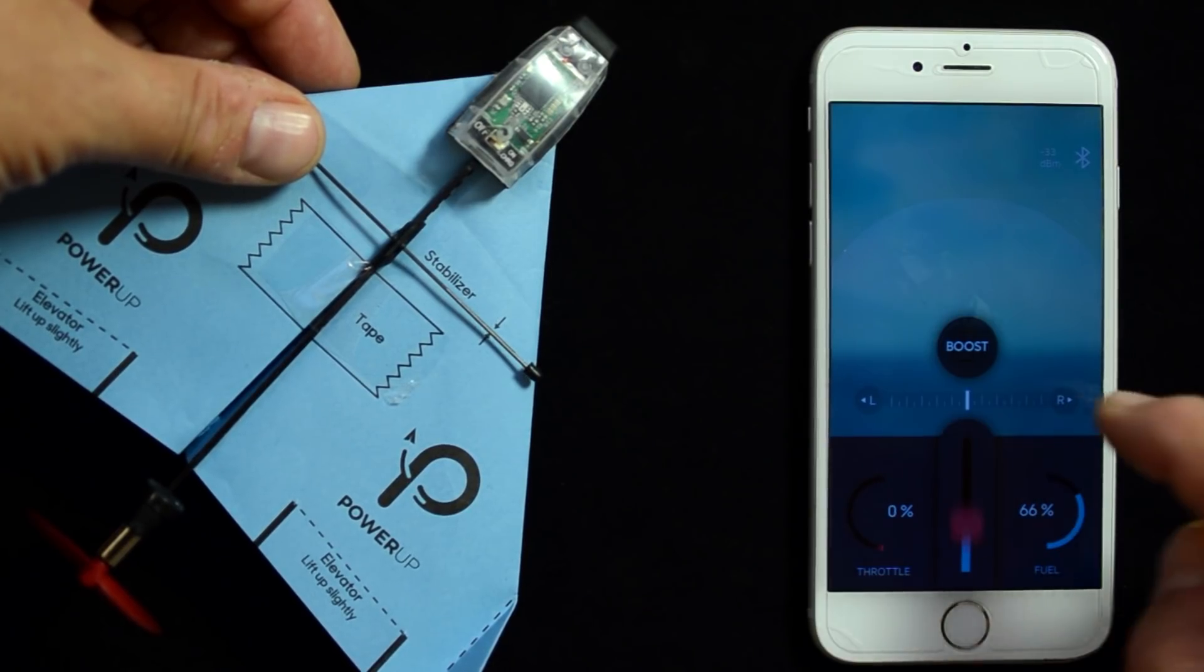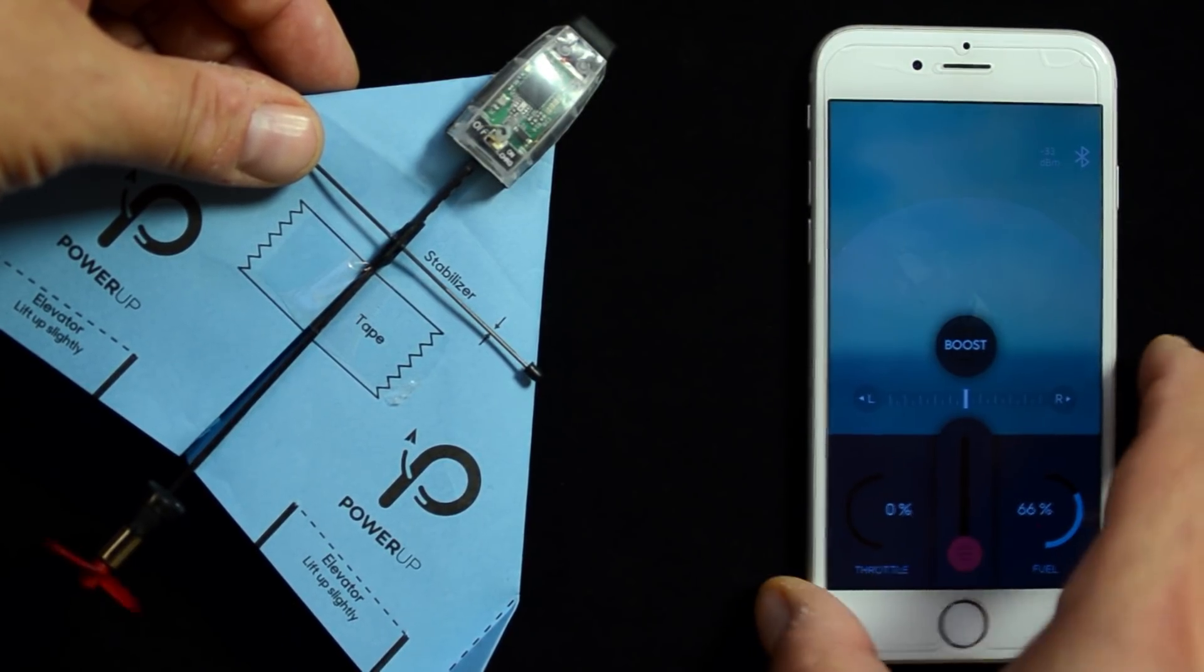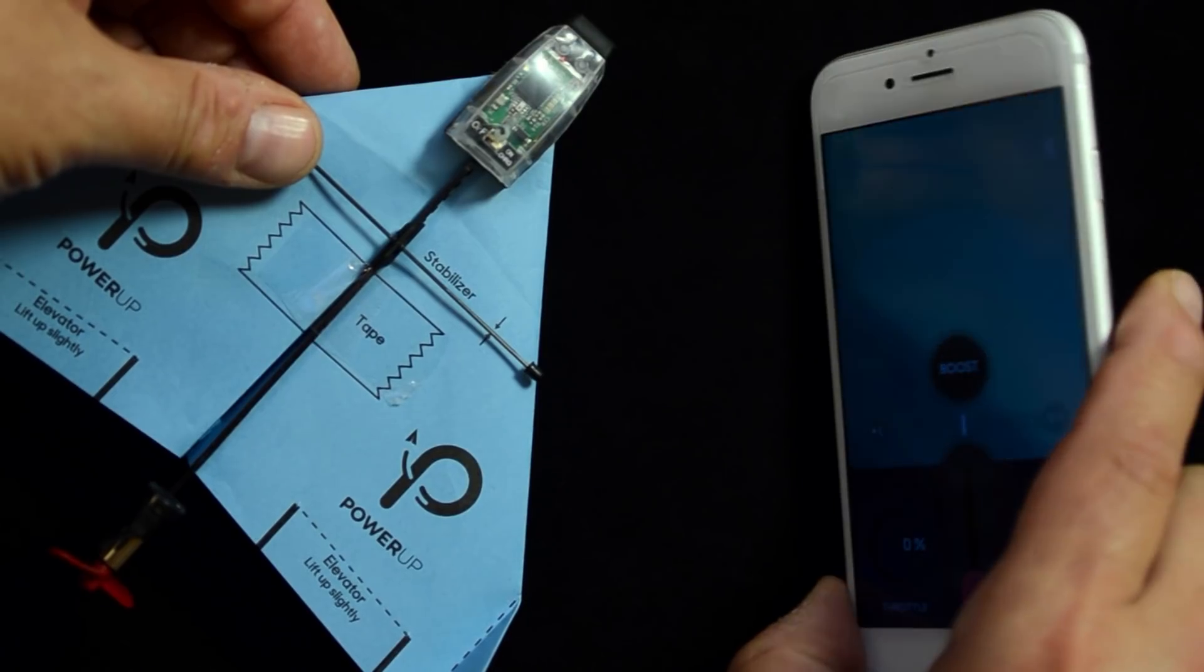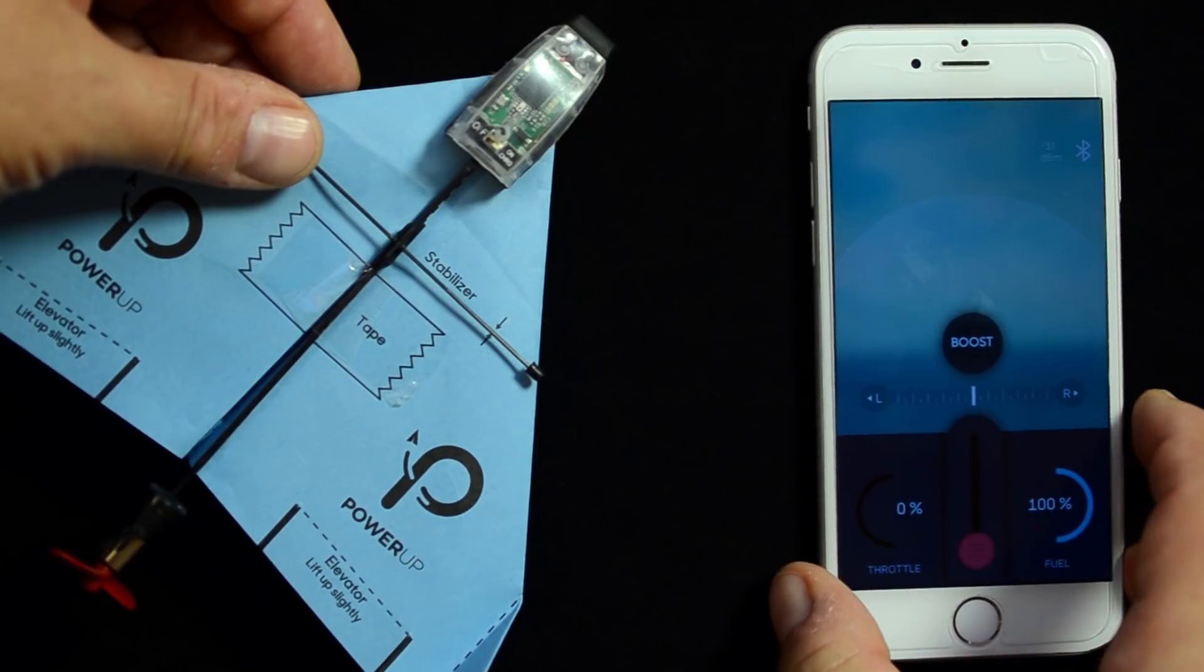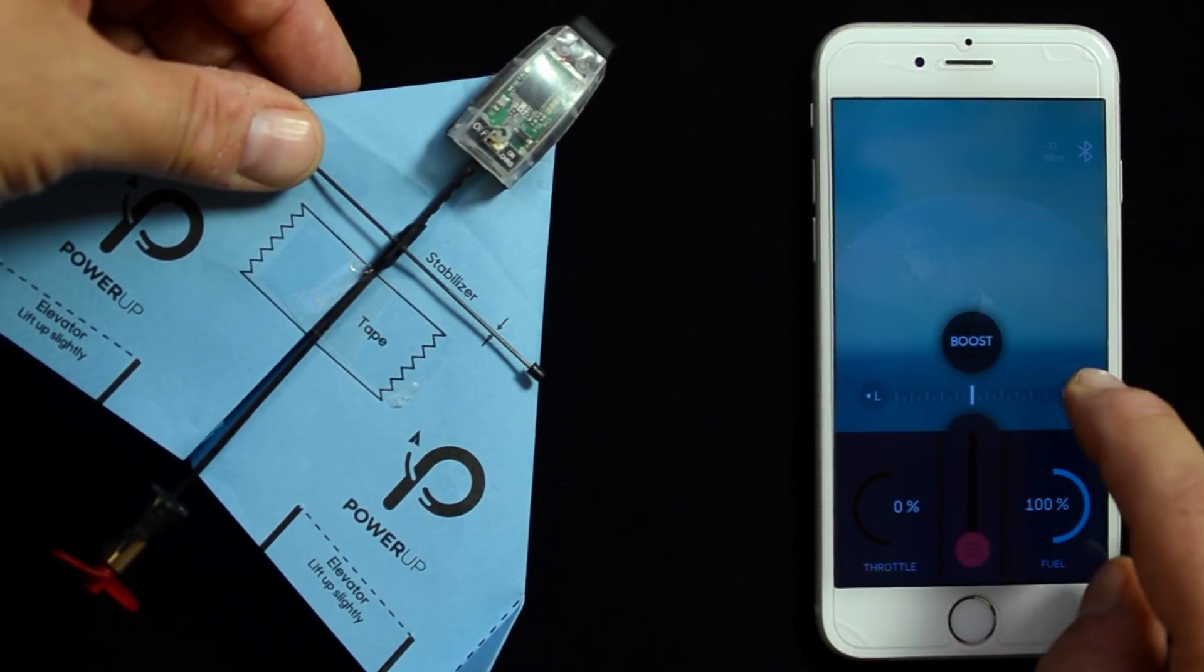to go faster or slower. To control your rudder, tilt your phone right or left. To trim your module, press